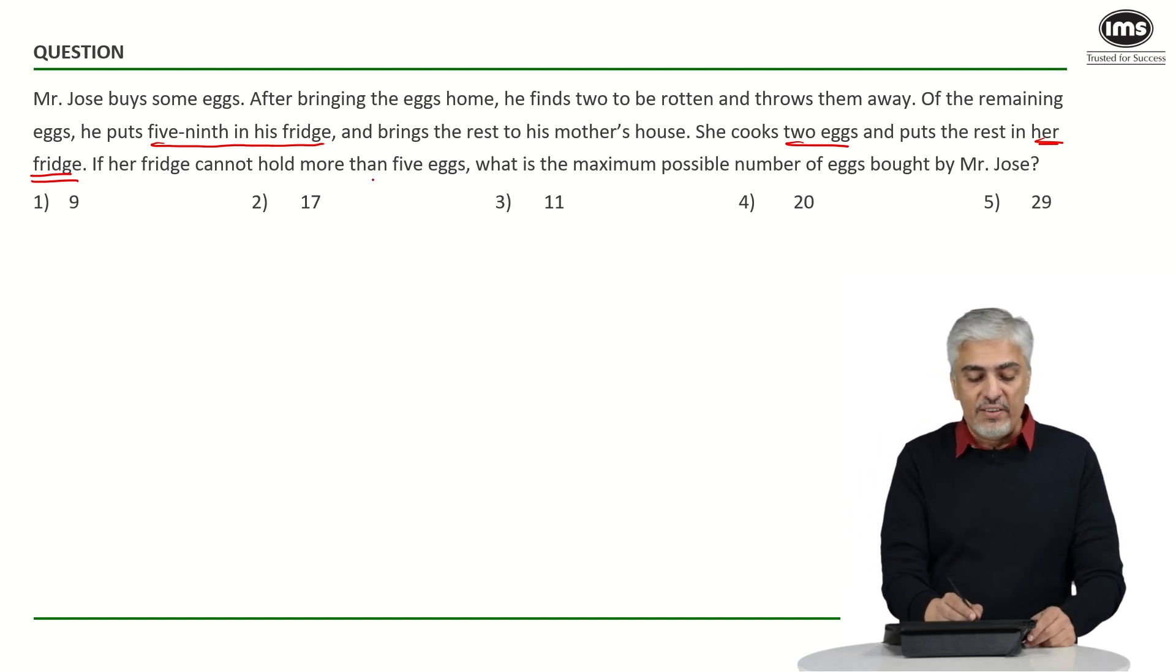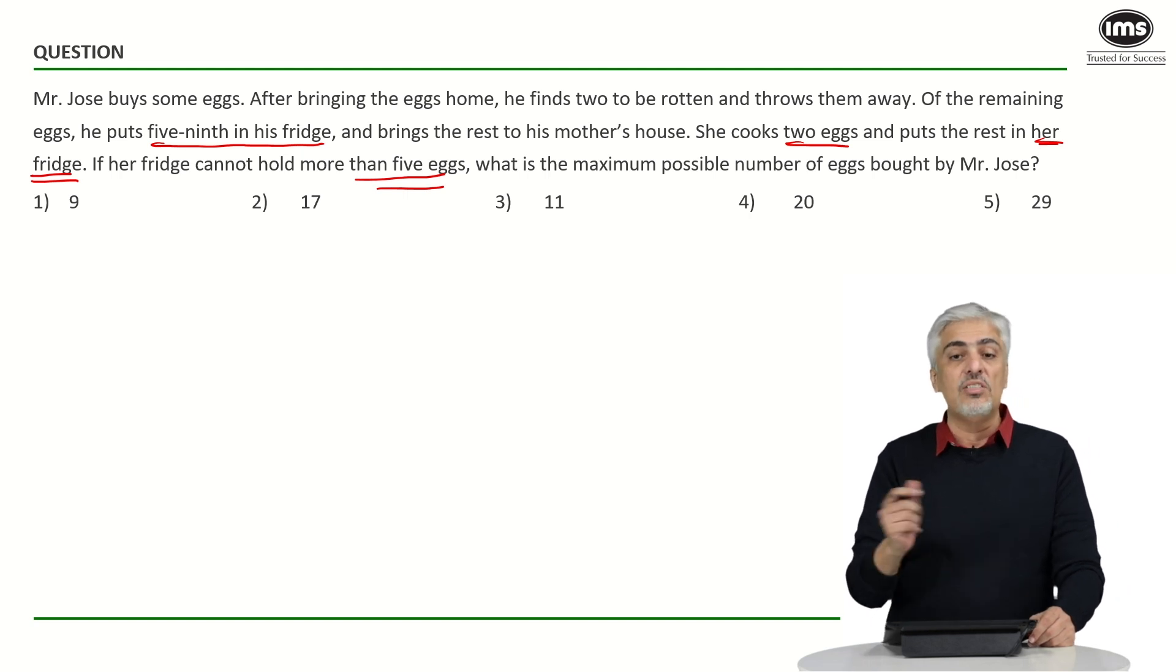If a fridge cannot hold more than 5 eggs, that means the maximum capacity is 5 eggs for the mother's fridge. What is the maximum number of possible eggs bought by Mr. Jose? So how would you start this question? Let's talk about two approaches for this question.